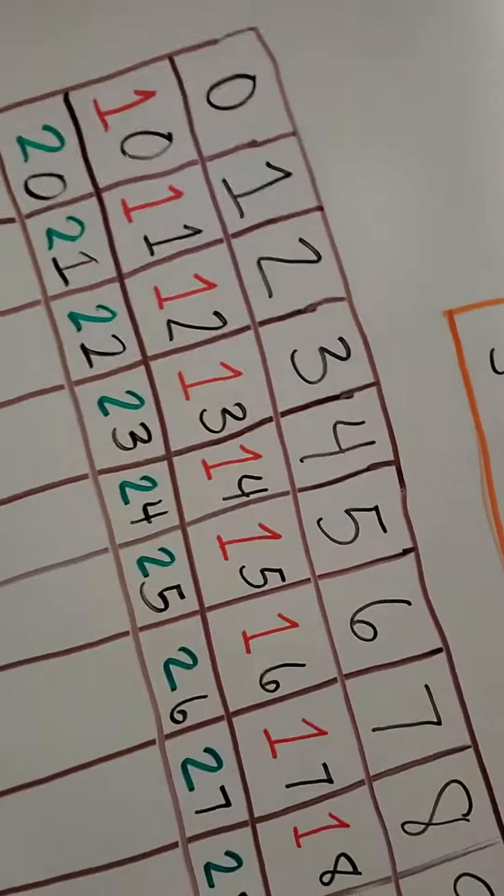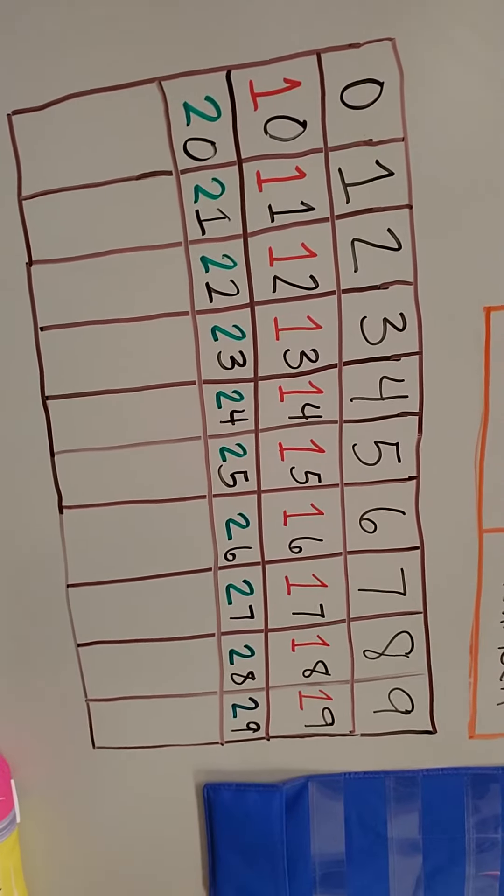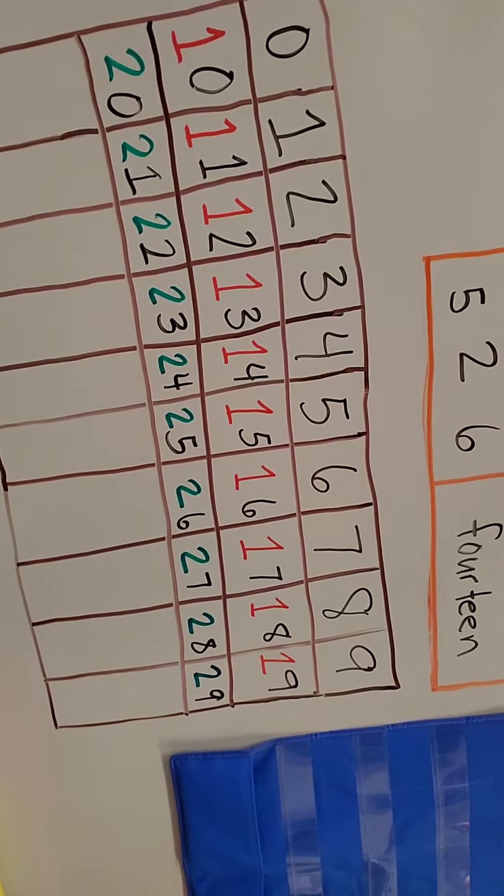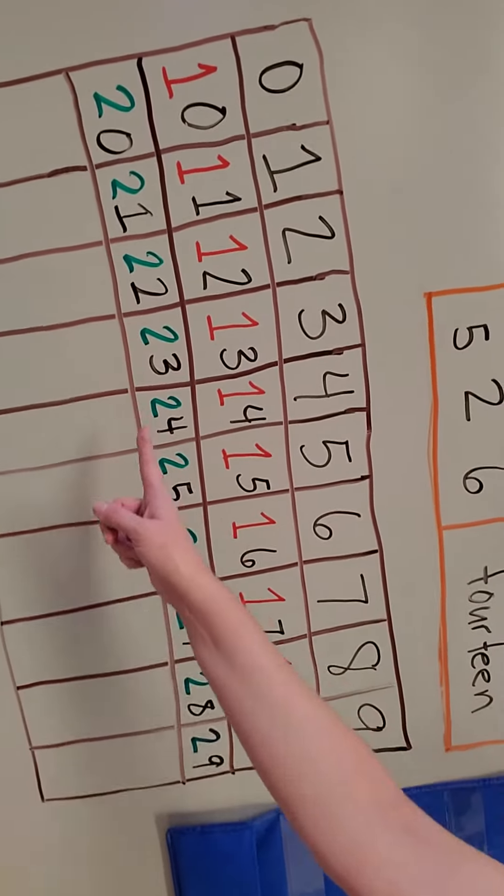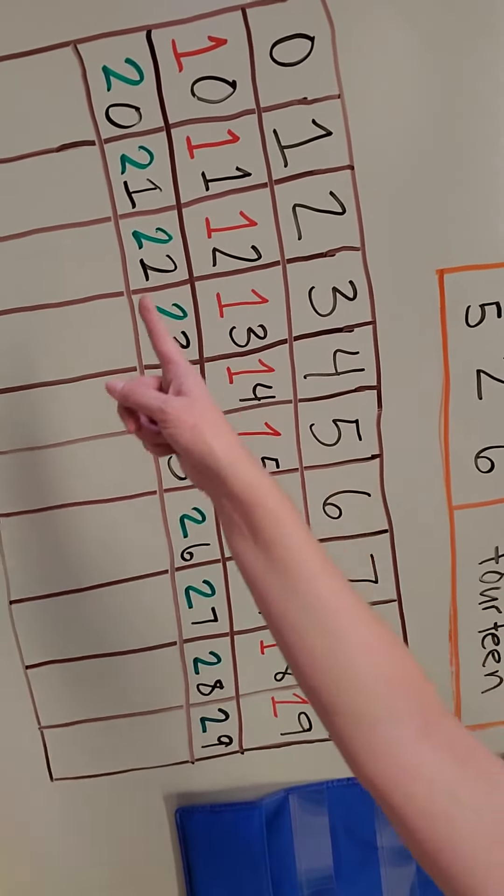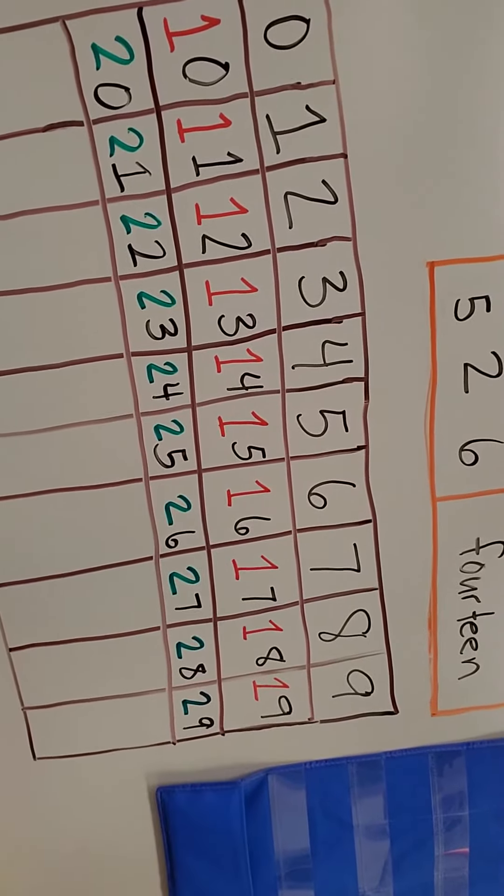All right, my friends. Last week we started learning that number counting has a pattern. Zero through nine in black. And now we've added the twenties, the row of twenties. So we have all of our twos in green, but all our one through nines are still in black.